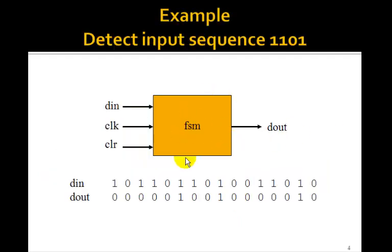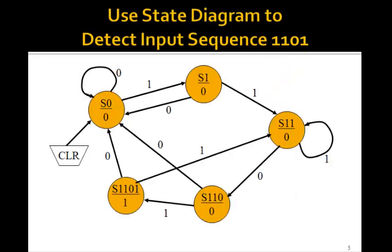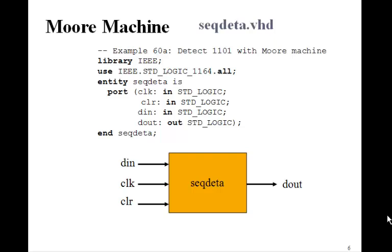Here was the finite state machine diagram we had for our sequence detector, where we wanted to detect the sequence 1, 1, 0, 1. Here was the state machine that we derived in the last lesson for this problem. The input will be clock, clear, D in, and the output will be D out, all of type standard logic.